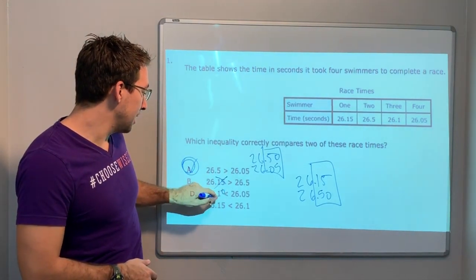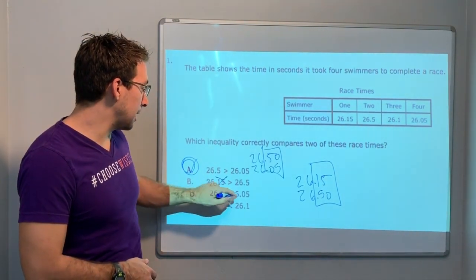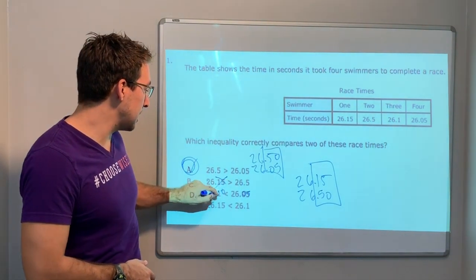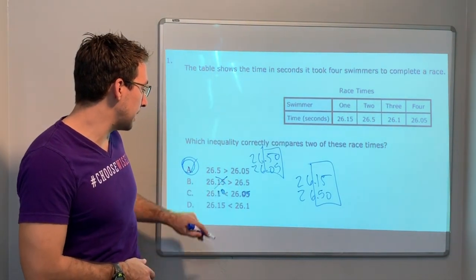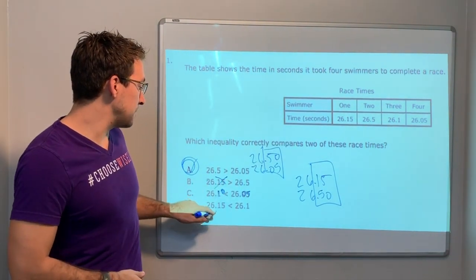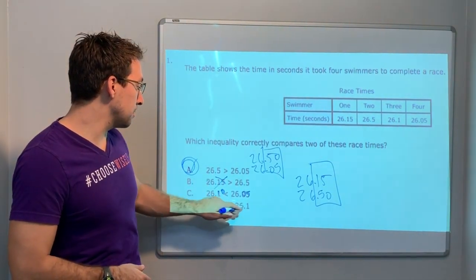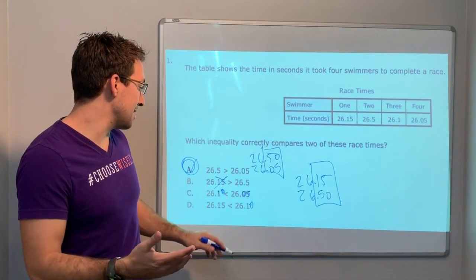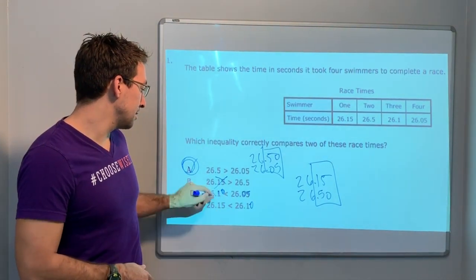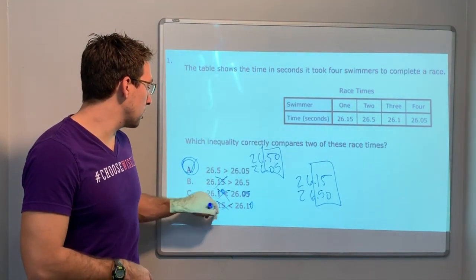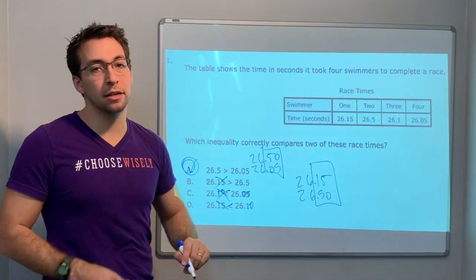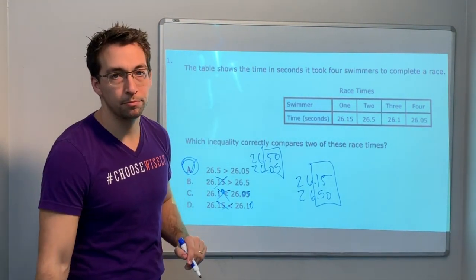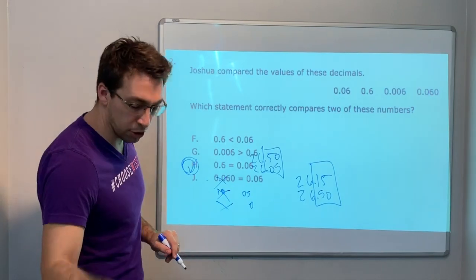10 is bigger than 5, and 15 is bigger than 10, so that option is also wrong. The remaining options are wrong too. A is our answer for number two.